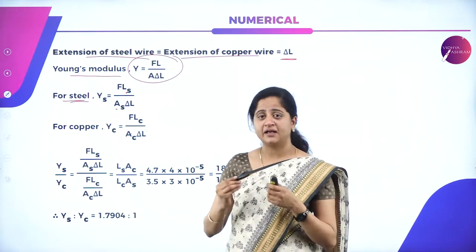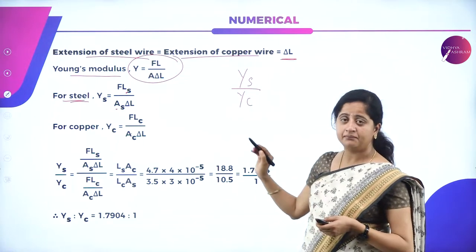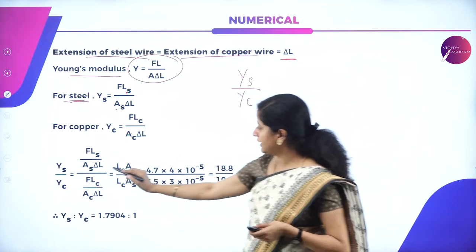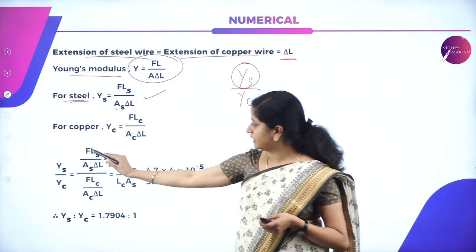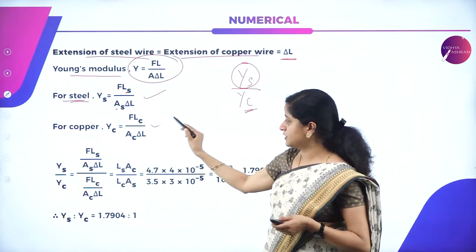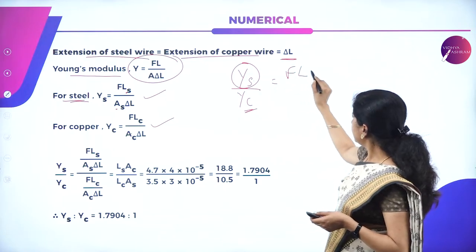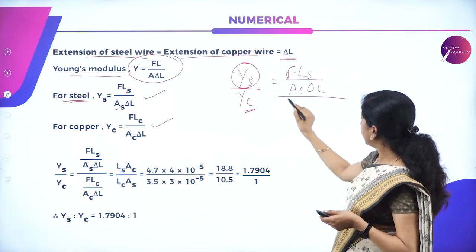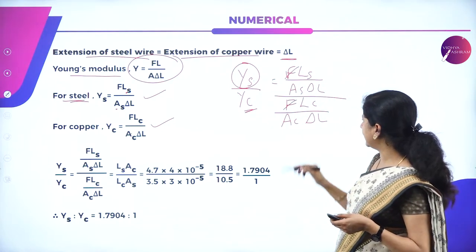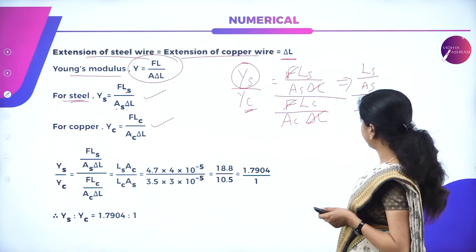Similarly for copper: Y_C = (F × L_C) / (A_C × delta L), where L_C is the length and A_C is the area of cross-section of the copper wire. To find the ratio Y_S / Y_C, substitute the formulas: Y_S / Y_C = [F×L_S / (A_S×delta L)] / [F×L_C / (A_C×delta L)]. Cancelling F and delta L, we get L_S / A_S divided by L_C / A_C, which simplifies to (L_S × A_C) / (A_S × L_C).